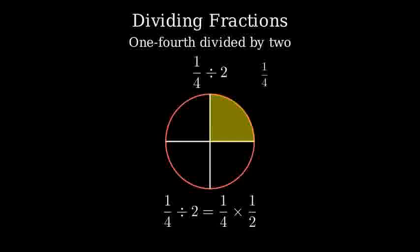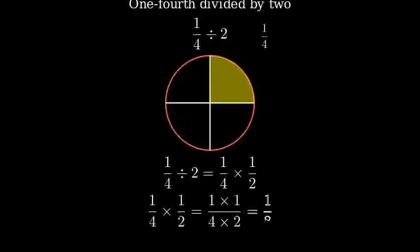To multiply fractions, we multiply the numerators together, and multiply the denominators together. So one times one equals one in the numerator, and four times two equals eight in the denominator.